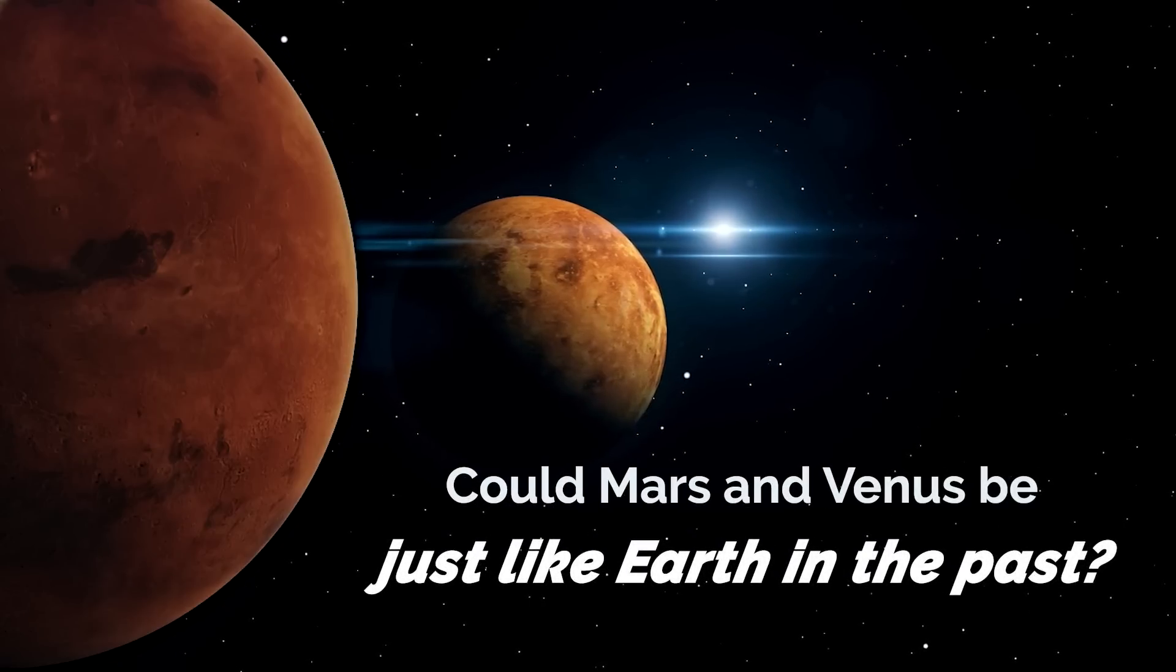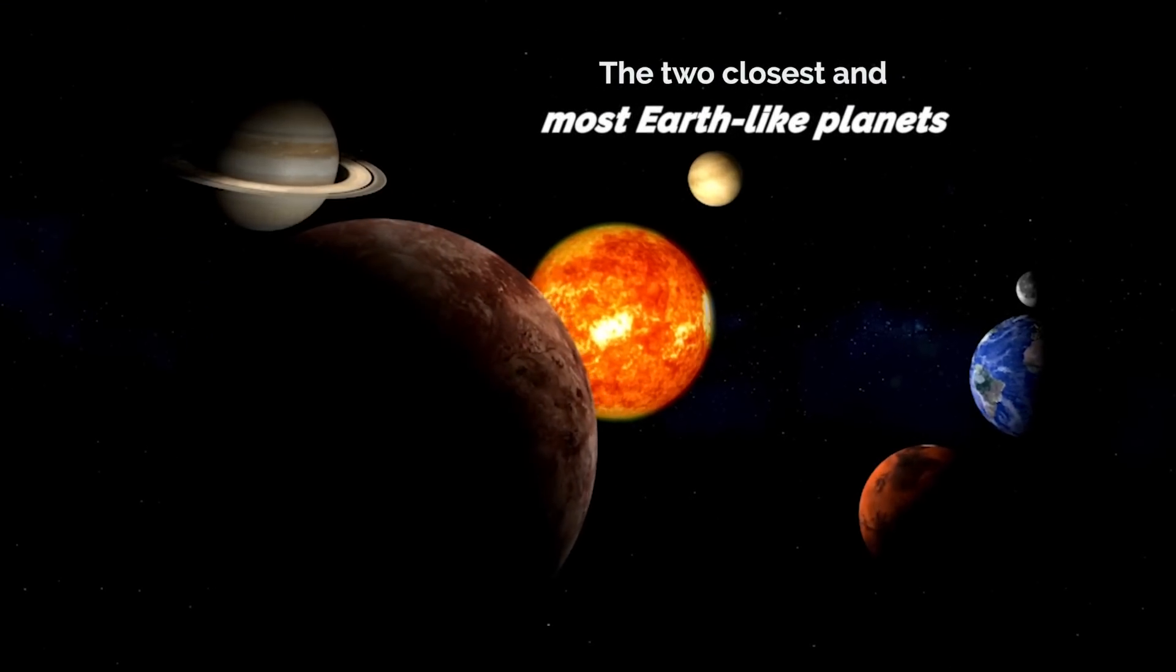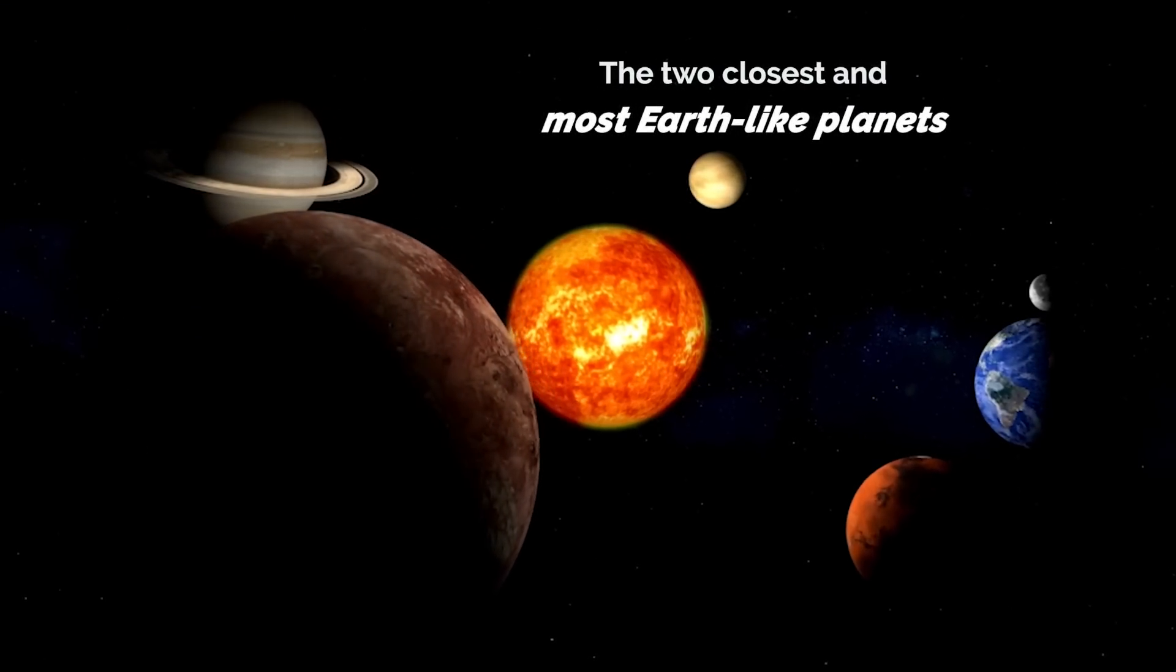Could Mars and Venus be just like Earth in the past? Mars and Venus are the two closest and most Earth-like planets in size and distance from the Sun.